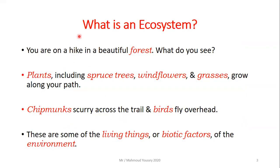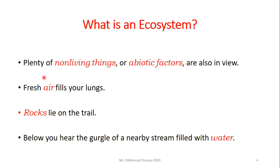Let's start. What is an ecosystem? Suppose that you are on a hike in a beautiful forest. What do you see? You will see plants including sprouts, trees, flowers, and grasses that grow along your path. Also you will see a chipmunk scurry across the trail and birds fly overhead. All these are living things — these are called biotic factors of the environment.